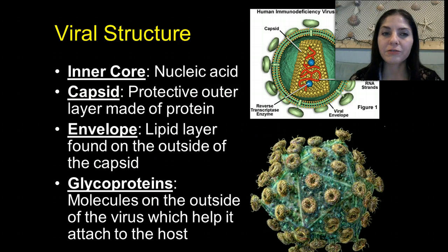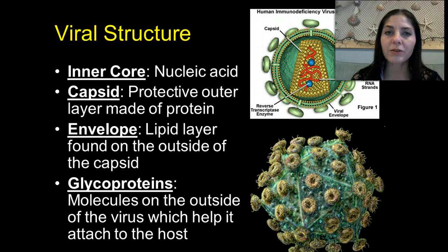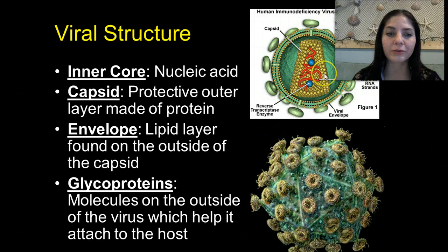So the structure of a virus: they have an inner core that is composed of nucleic acid. If you look right here, this is the inner core of nucleic acid. That nucleic acid can either be RNA or DNA. They also have what's called a capsid — this is a protective outer layer made up of protein. Right here we have our capsid that's protecting that nucleic acid core.